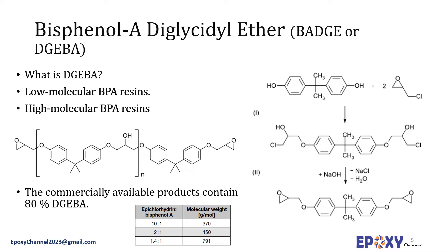Bisphenol A diglycidyl ether-based epoxy coatings are extensively used for coating the inside of cans that come into contact with food, and thus are food contact materials. Regarding its safety, bisphenol A diglycidyl ether is highly reactive and forms a number of species upon exposure to water or HCl. Many of these compounds are suspected endocrine disruptors. Hydrolysis of the ether bonds liberates bisphenol A, which is also strongly suspected of being an endocrine disruptor.